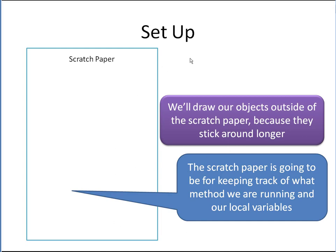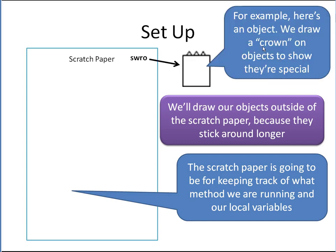We're going to draw our objects outside of the scratch paper, because the scratch paper is for our local variables and our methods. The methods are sort of short-lived, but when you make an object it pretty much sticks around forever unless nobody's pointing at it anymore.